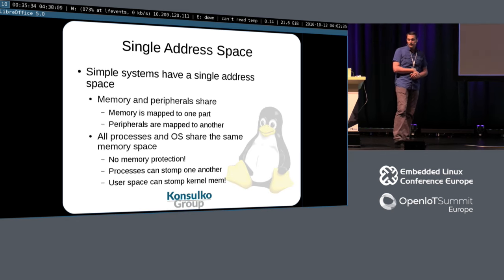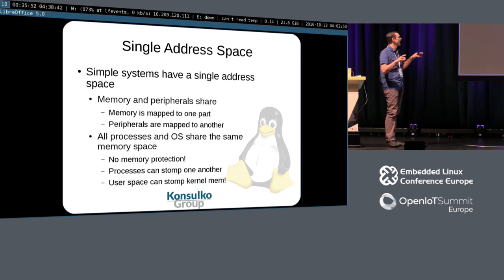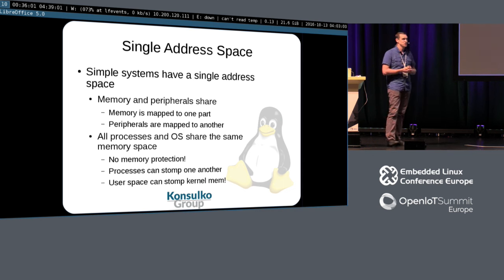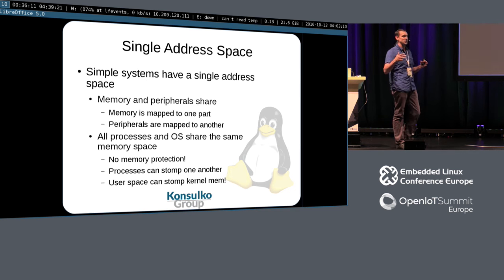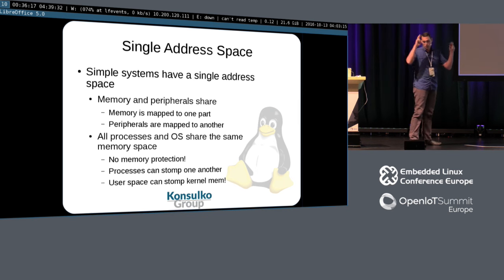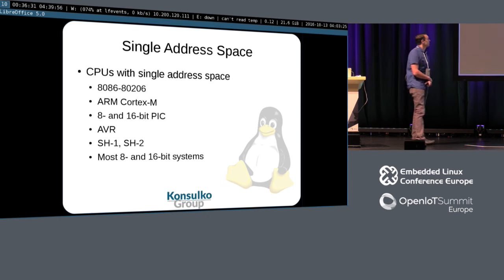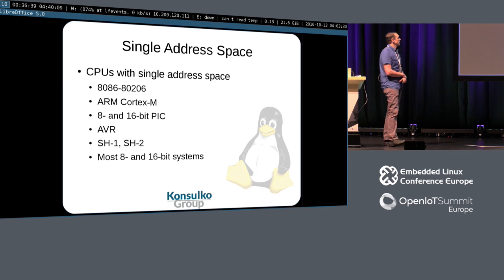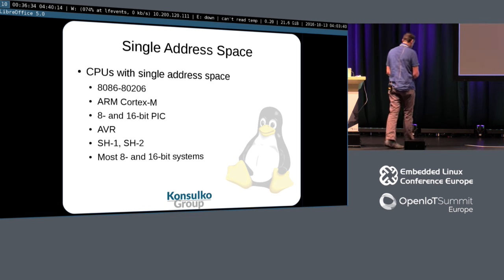We're going to talk about memory management from beginning to end — it's the intro. We start at physical memory. If you look at low-end systems, they have a single address space where memory and peripherals share that same space. They're mapped into different parts of that single address space, and all processes in the OS share the same memory space. There's no memory protection, and processes can stomp on each other. Examples of these would be an 8086, Cortex-M parts, AVRs — all these low-end microcontrollers and pre-MMU processors.